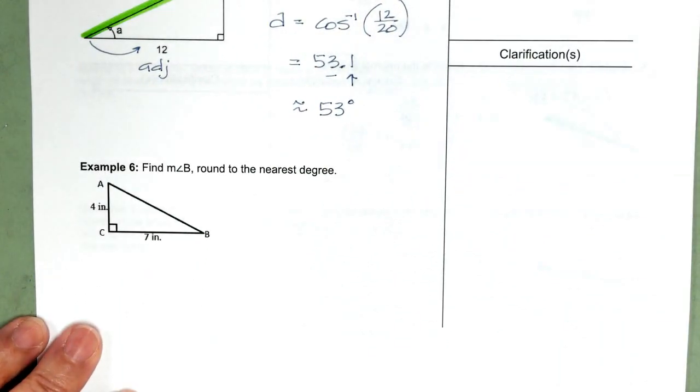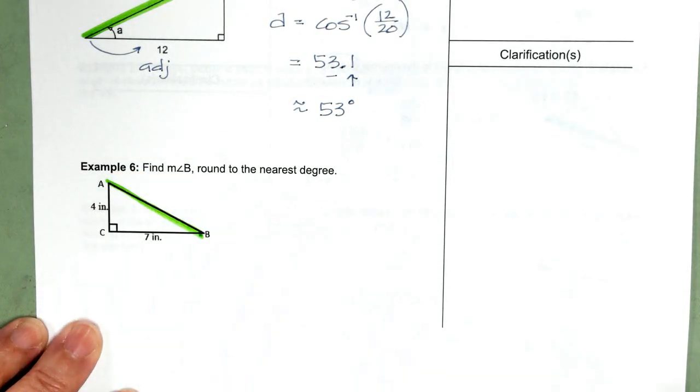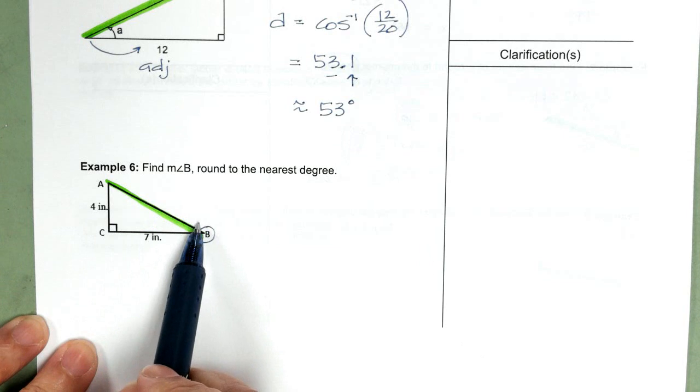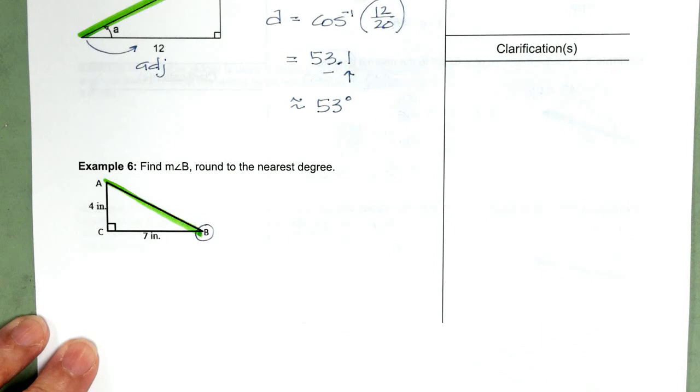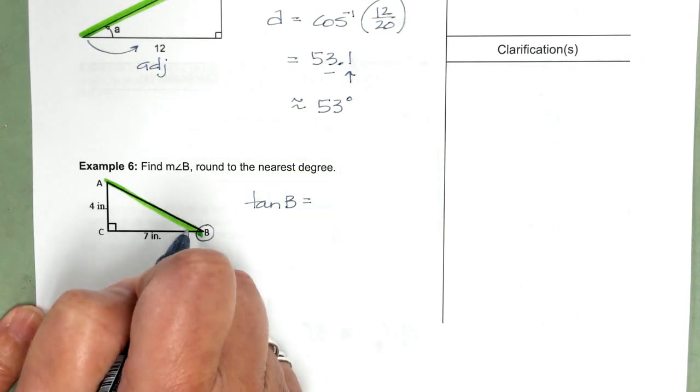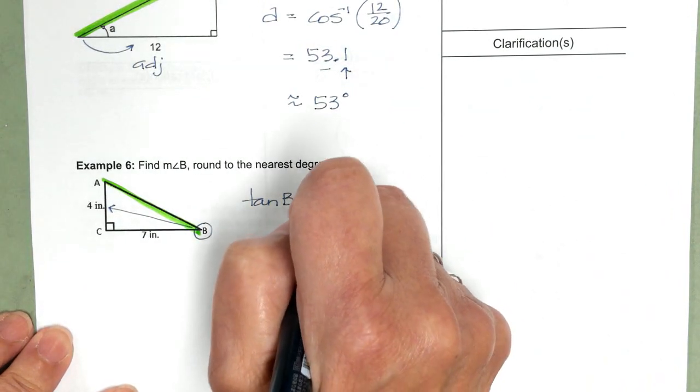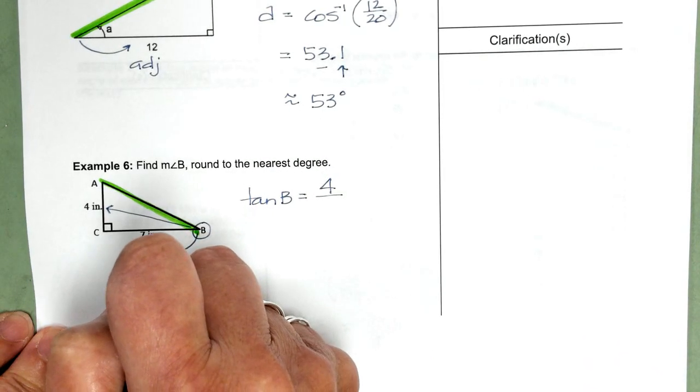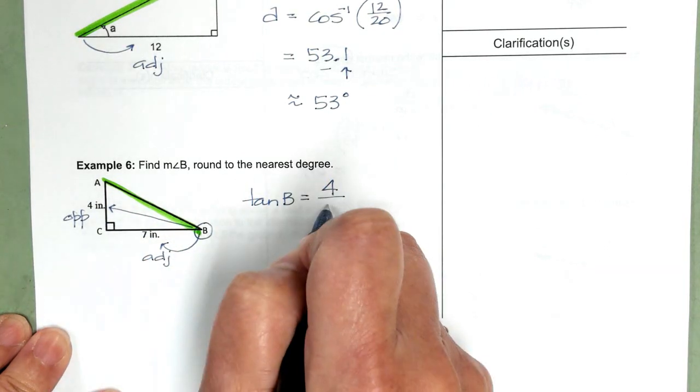Our last example is we want to find the measure of angle B. Notice we don't have any information about our hypotenuse, so this is going to be tangent. With tangent, you need to pay attention to what is the opposite and the adjacent side. So, I'm going to start with tangent of B equals the side opposite angle B measures 4, and the side adjacent to angle B measures 7.